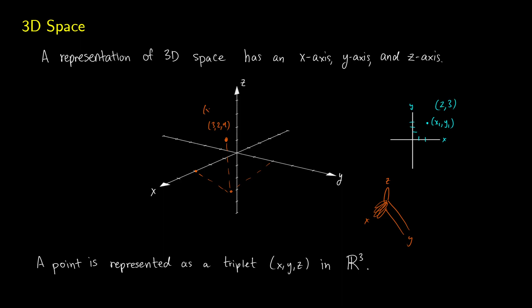This point would be represented as (x, y, z), because we have some number in the x, some number in the y, and some number in the z direction. We represent these as triplets (x, y, z) and we say they're in R³. What this means is that x, y, and z each come from the real numbers — so R × R × R gives us R³.